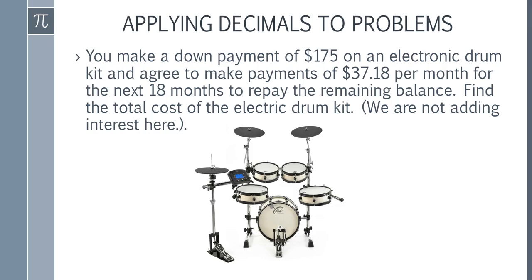You make a down payment of $175 on an electric drum kit and agree to make payments of $37.18 per month for the next 18 months to repay the remaining balance. Find the total cost of the electric drum kit.